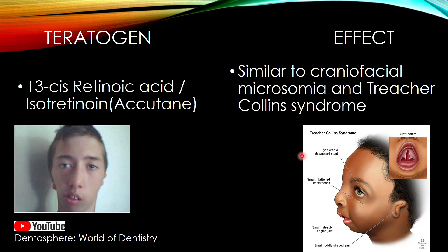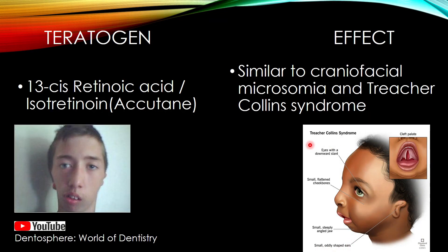In craniofacial microsomia, skeletal components and the ear are also deformed. In Treacher Collins syndrome, severe features include eyes with a downward slant, flattened and small cheekbones, a steeply angled jaw, and oddly shaped ears. Cleft palate is also seen in Treacher Collins syndrome.